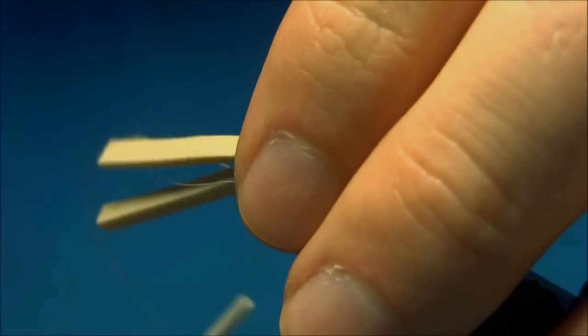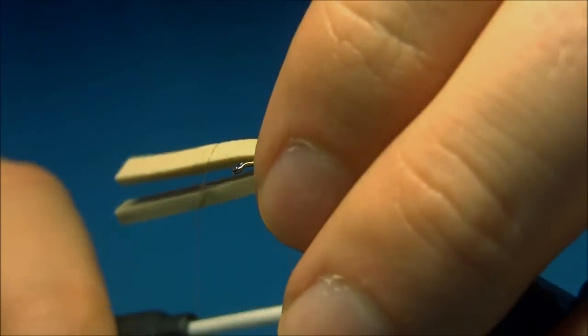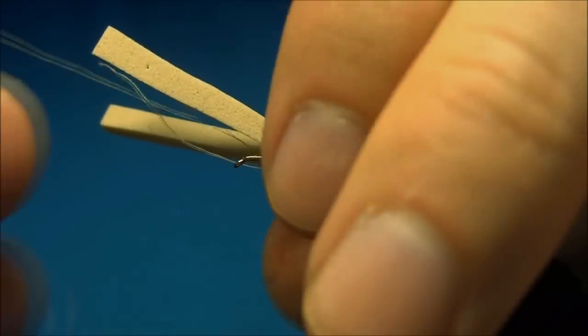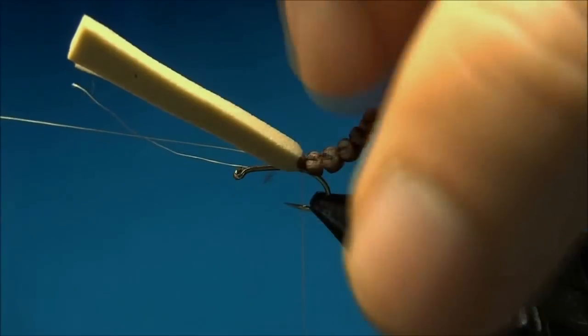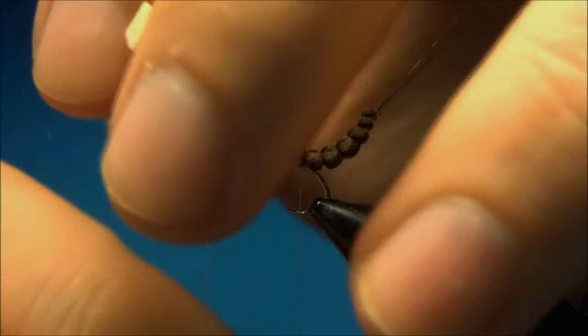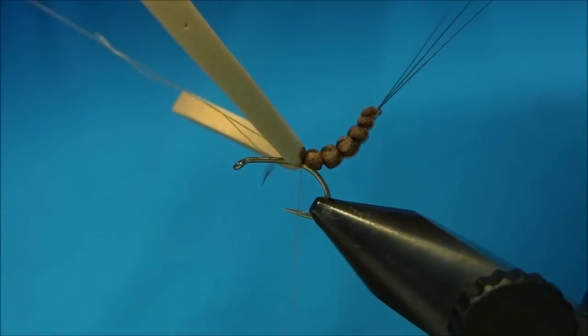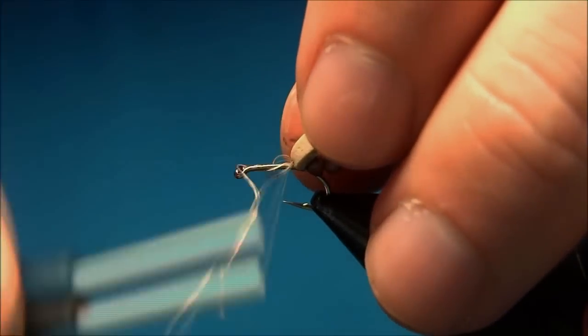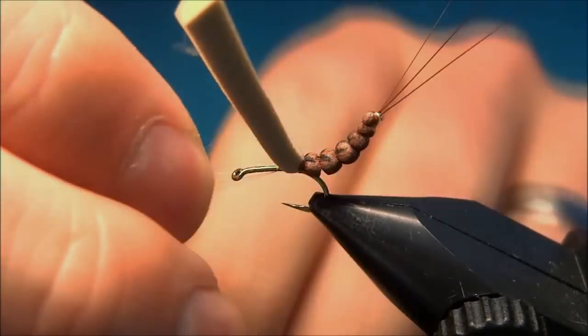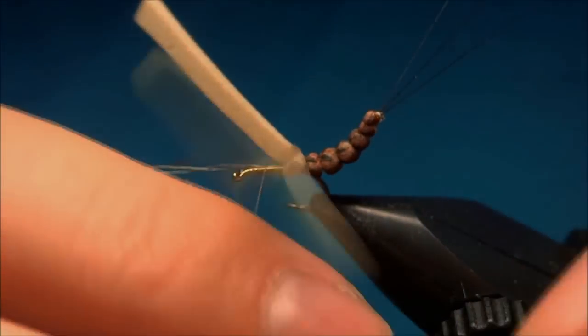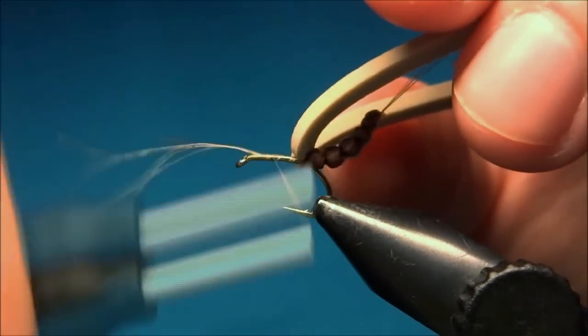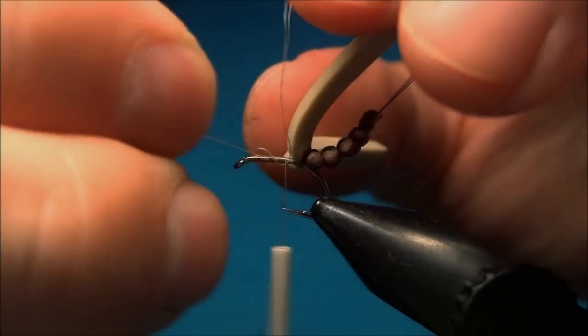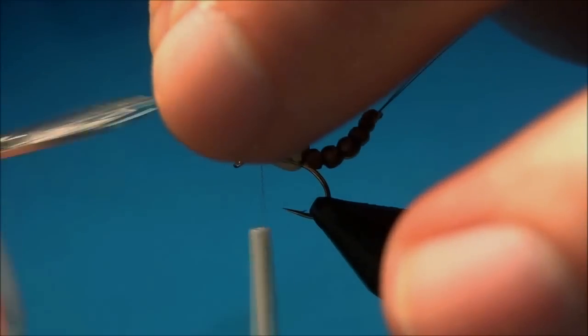And there we'll tie in our body. And we'll tie it in where the last segment. Some tight turns to secure. Now we can pull on the longer thread that we left in order to curve the body. And now secure the ends so that the body doesn't move and cut off the rest piece.